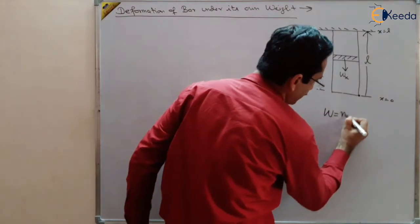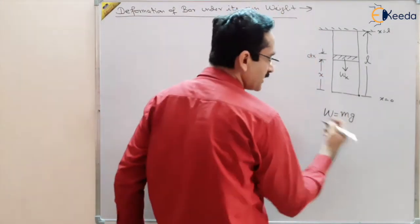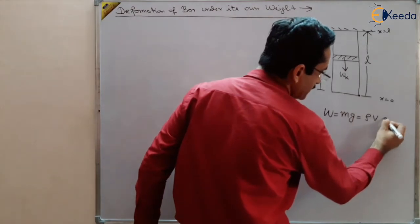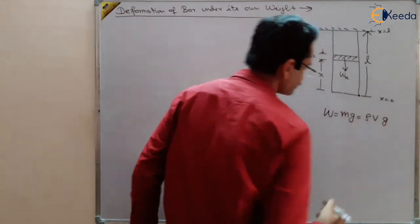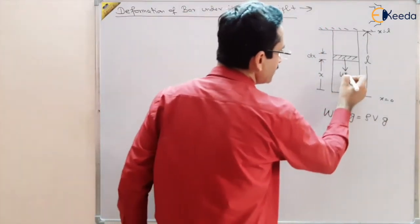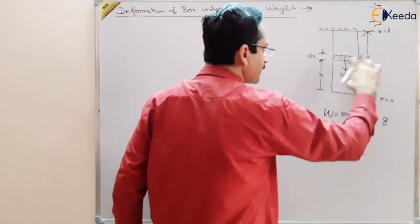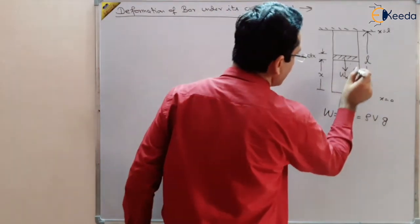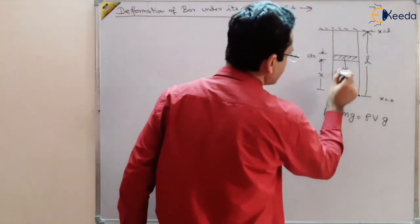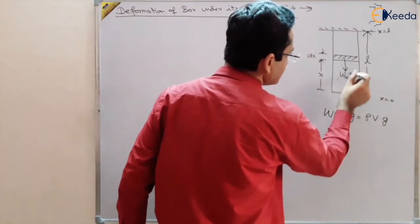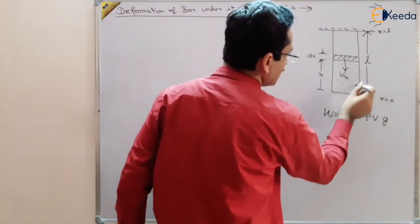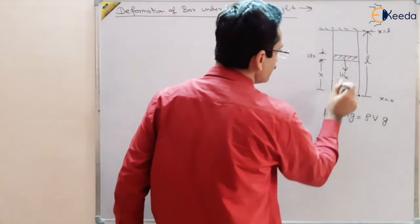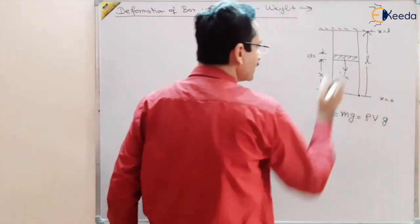Weight equals m × g, and mass equals density × volume. So wx = ρ × volume × g. This part — which I am showing with dotted lines — has weight wx, which is trying to pull this dx downward.